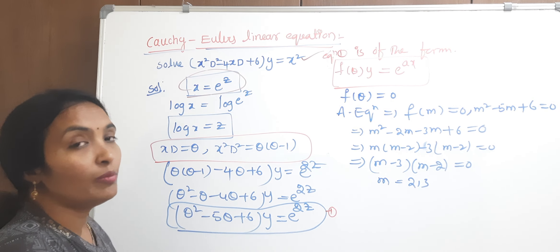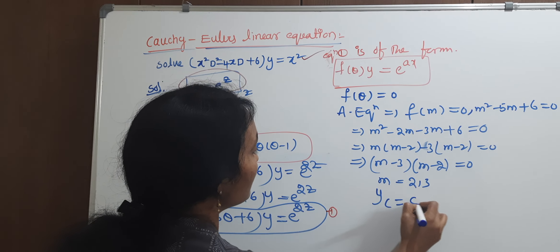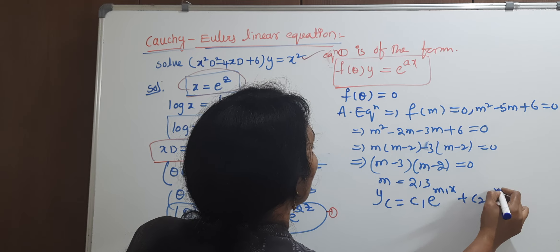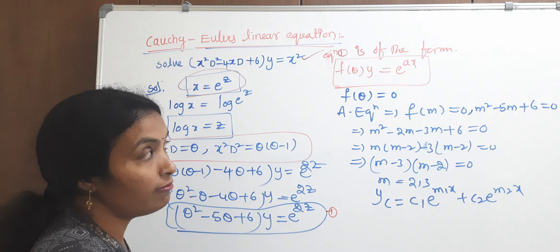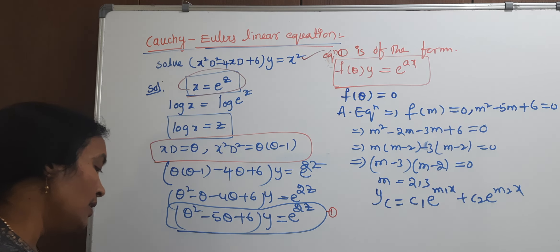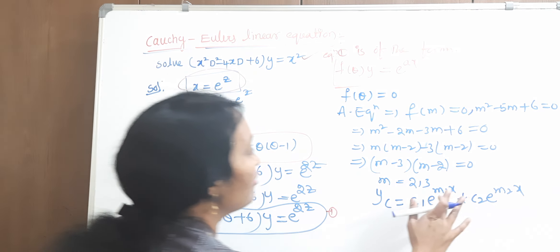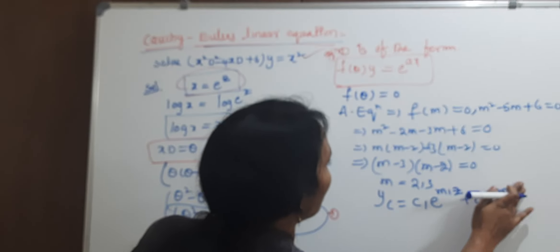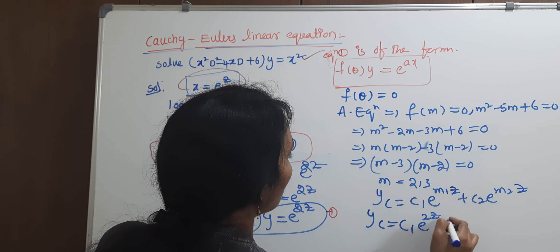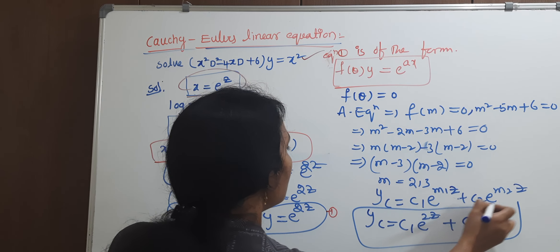Since the two roots are different, the complementary function yc equals c1·e to the power of m1·z plus c2·e to the power of m2·z. So yc equals c1·e to the power of 2z plus c2·e to the power of 3z.